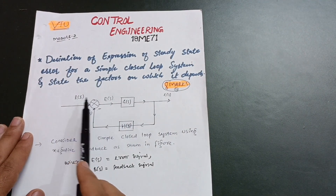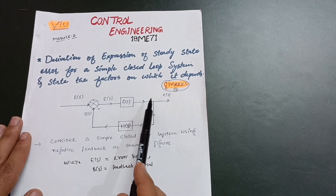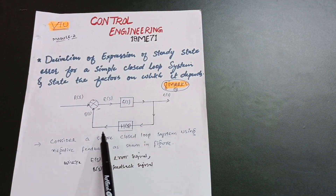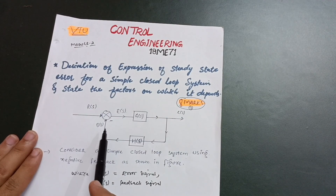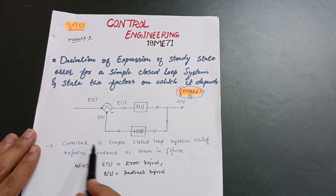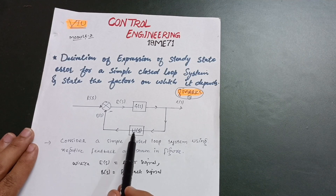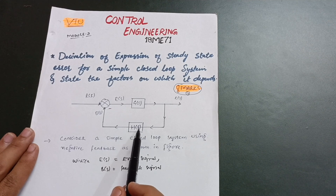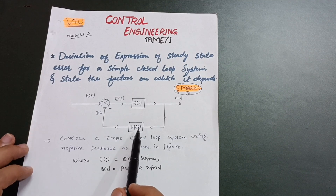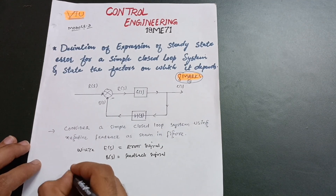Let us derive it. This is the closed loop system: R(s) is the input, this is the summing point, E(s) is the error signal, G(s) is the forward path, C(s) is the output, and H(s) is the feedback path. B(s) is the feedback signal. Consider a simple closed loop system using negative feedback as shown in the figure. H(s) is the feedback path, E(s) is the error signal, and B(s) is the feedback signal.